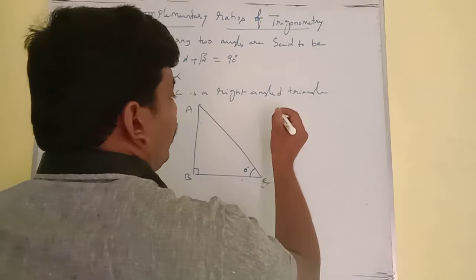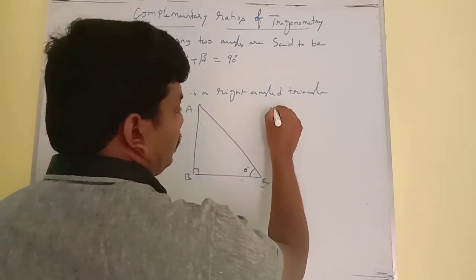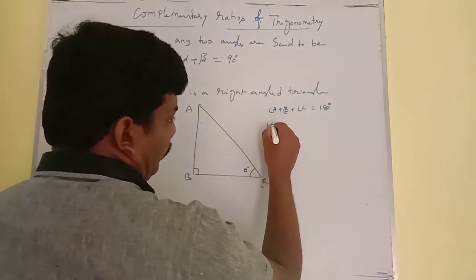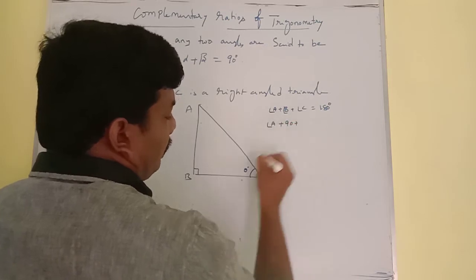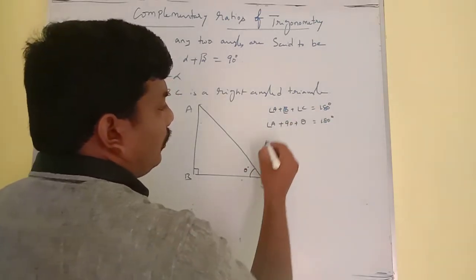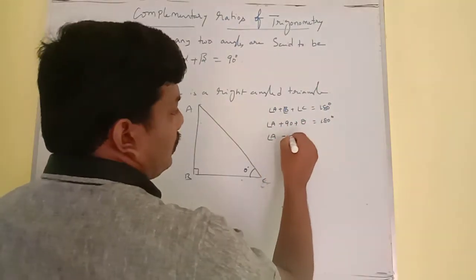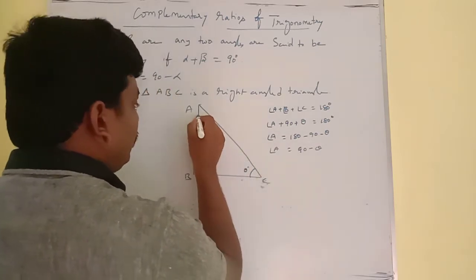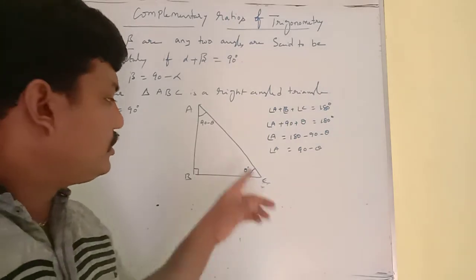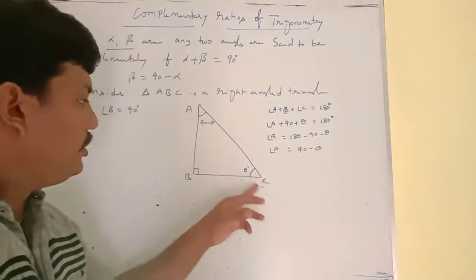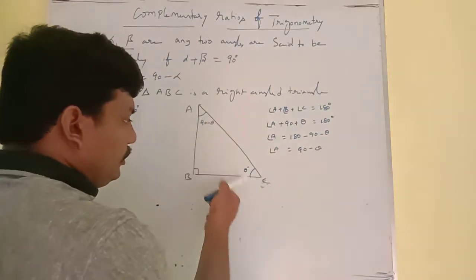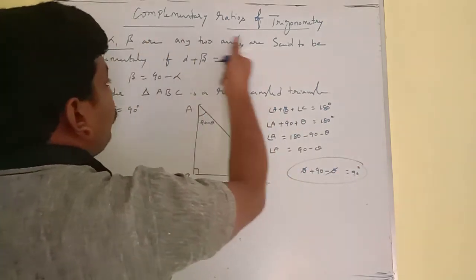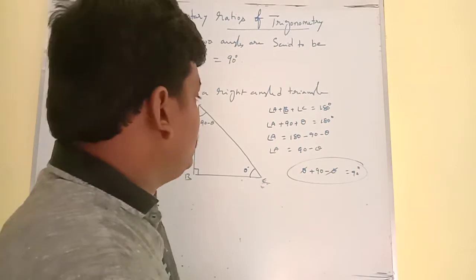By the angle sum property, angle A plus angle B plus angle C equals 180 degrees. Substituting angle B as 90 degrees and angle C as theta, we get angle A equals 90 minus theta. So theta and 90 minus theta are complementary angles because their sum equals 90 degrees.